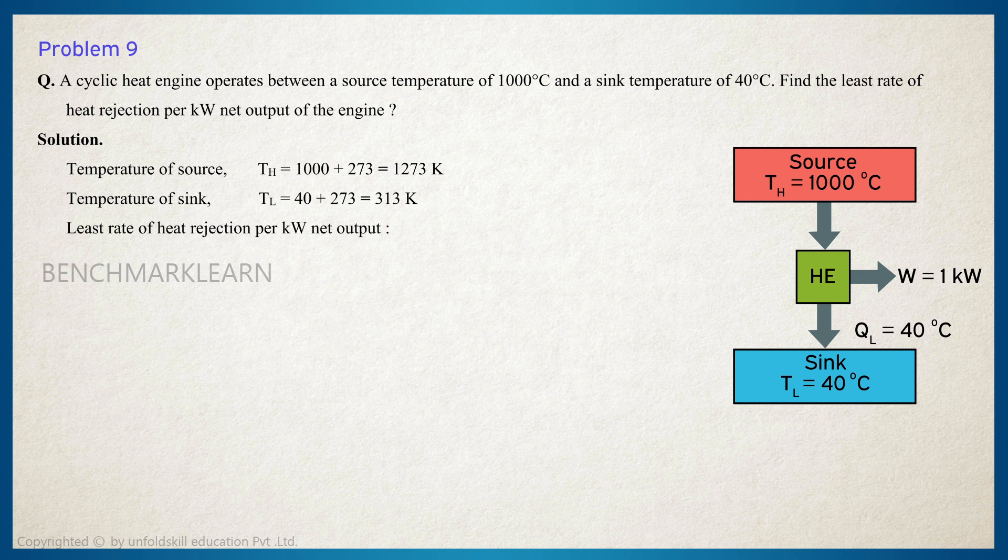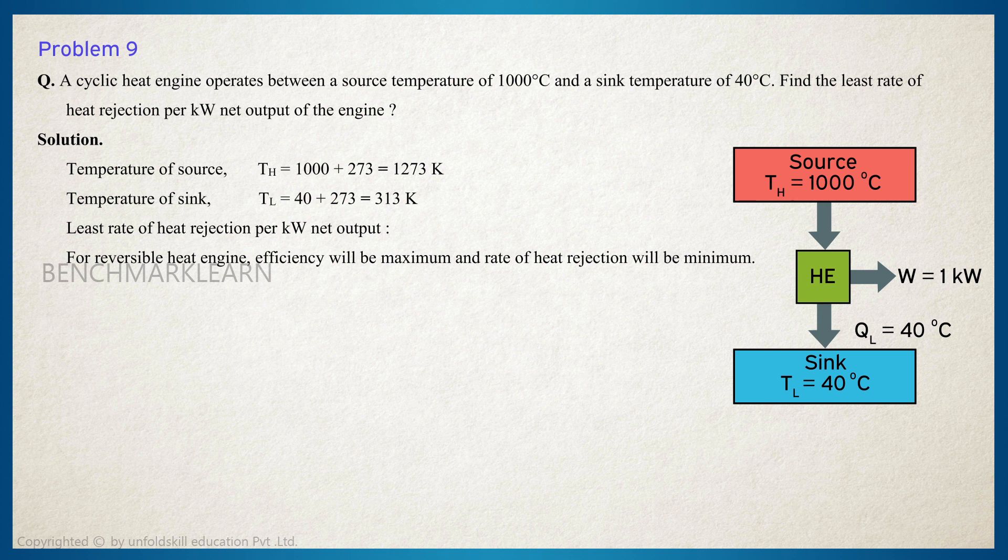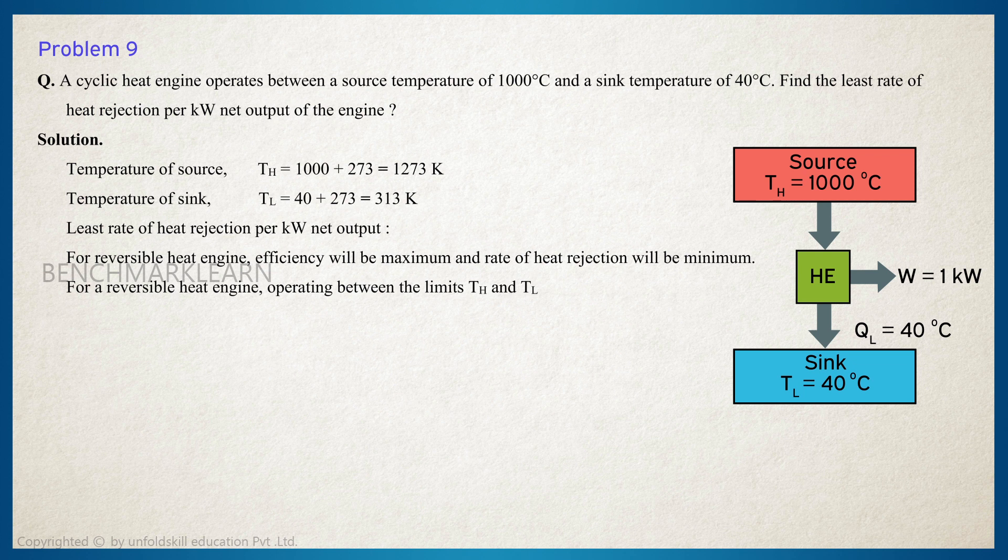The least rate of heat rejection per kilowatt net output: For a reversible heat engine, the efficiency will be maximum and the rate of heat rejection will be minimum. For a reversible heat engine operating between given temperature limits TH and TL, the thermal efficiency...